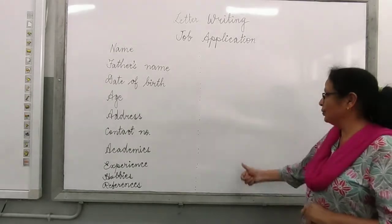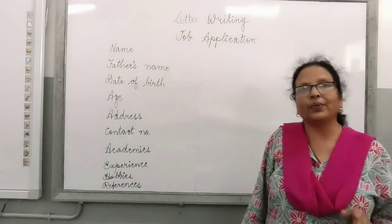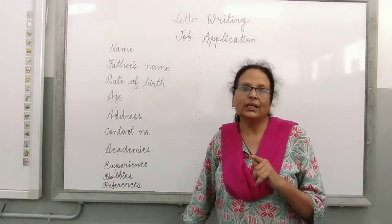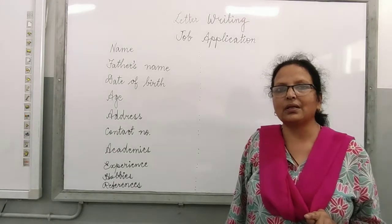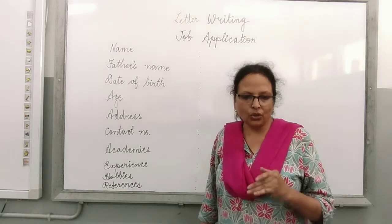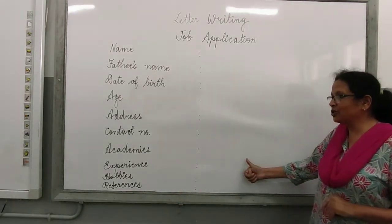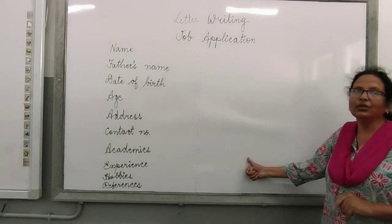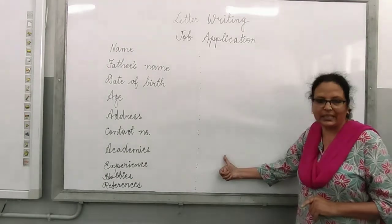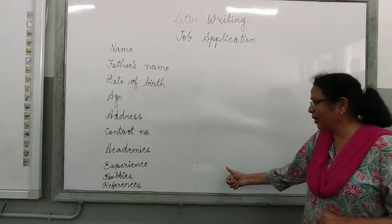Since you are 28 years old, you may have at least 3 or 4 years of experience. We begin working by the age of 23 or 24. So you will write 4 years of experience along with the name of the school. Remember you are applying in a school, so it will be a school.